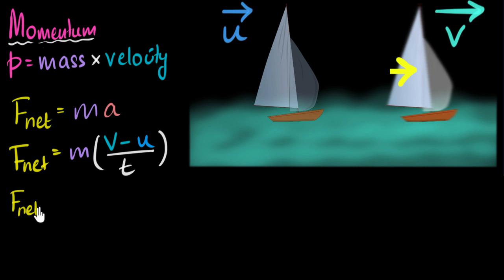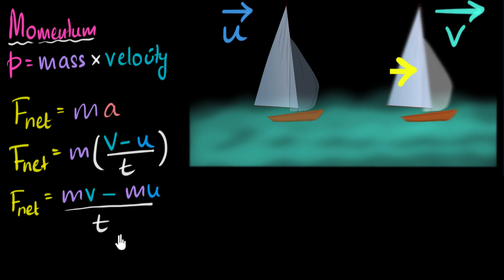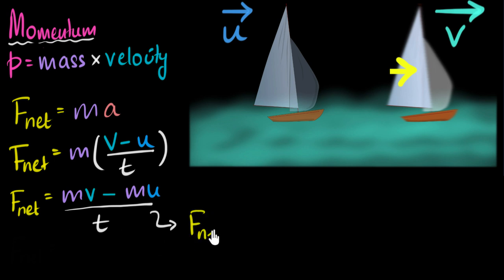Let's simplify: opening up the brackets, we get M times V minus M times U, divided by T. Looking at what we have: MV is mass times the final velocity, which represents the final momentum of our boat. And MU is the initial momentum of that boat. This means the net force acting on our boat equals the final momentum (P_F) minus the initial momentum, divided by the time T.